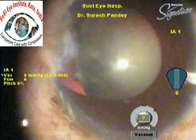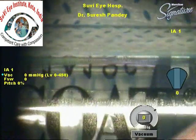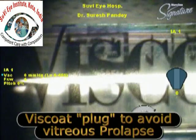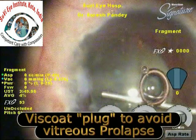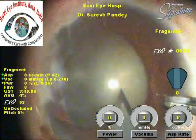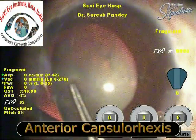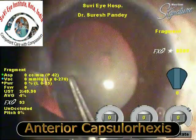The first step is to check whether there is any vitreous in the anterior chamber; if present, it needs to be removed first and the anterior chamber cleared. We are injecting Viscoat as a plug to prevent vitreous from prolapsing out from the area of subluxation. The main incision is then made — it should be placed away from the area of zonular adhesions. For example, if subluxation is temporal, a superior incision is preferred.